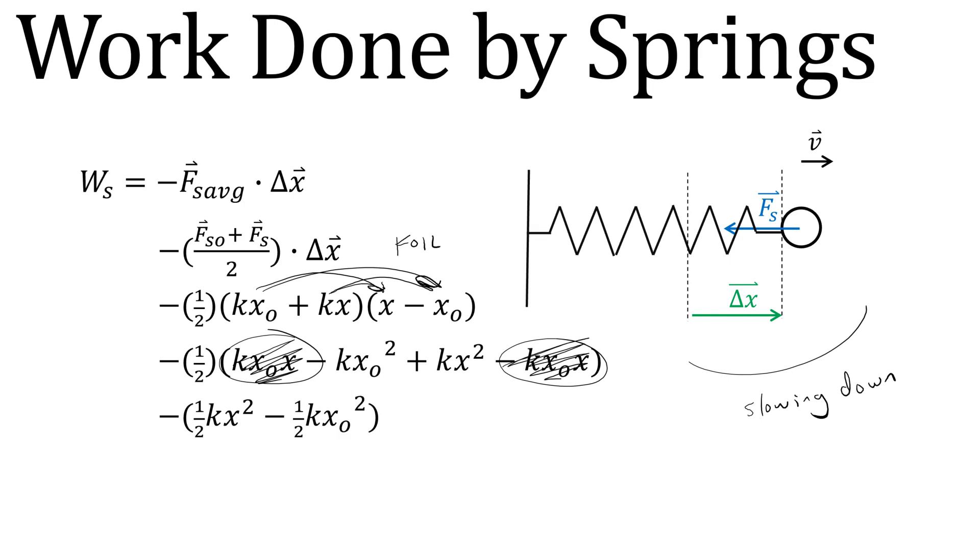Okay, so now we have one half Kx squared minus one half Kx not squared. You'll notice that each of these things is a snapshot of what's happening at the end with the x squared and what's happening in the beginning with the x not squared. We call each of these a spring potential energy, or a US. We call the one US for the final spring potential and US not or USO for the initial spring potential. And as you can see, since you've got US minus USO, we've got delta US. Or what this essentially is telling us is that work done by the spring is equal to a negative change in the potential of that spring.